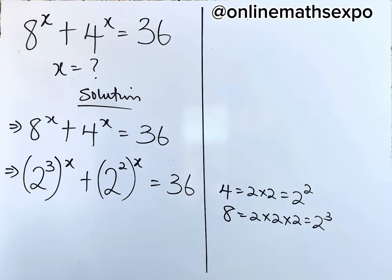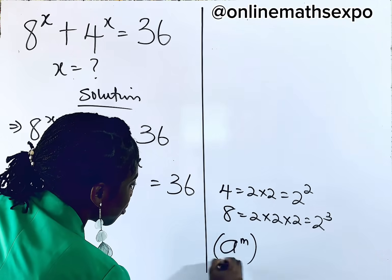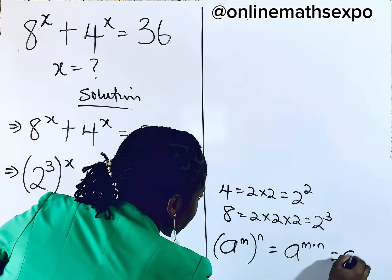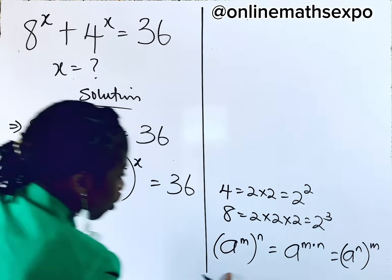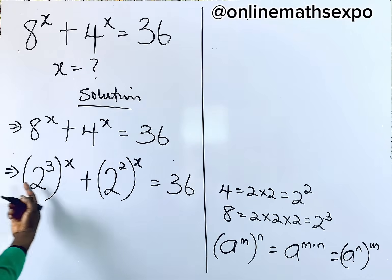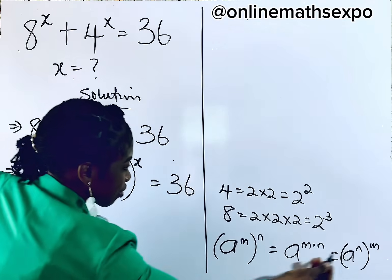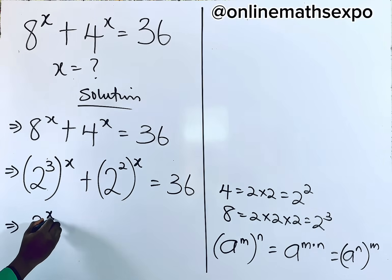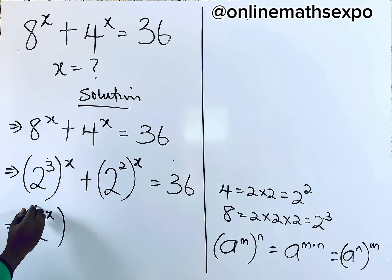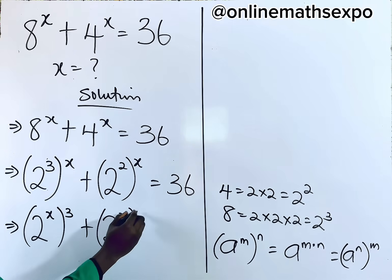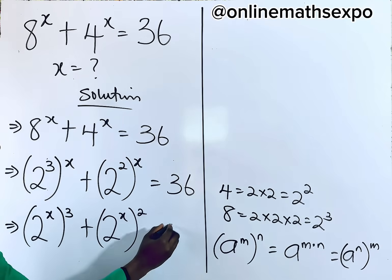Interesting. What do you think we should do next? We know that for every (a^m)^n, it equals a^(mn) — we can switch the powers. So applying that on the left side, we get 2 to the power of x, raised to the power of 3, plus 2 to the power of x, raised to the power of 2, is equal to 36.